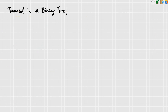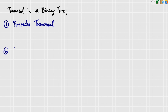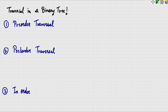For non-linear data structure traversal, if we want to visit nodes, there are three types of traversals: pre-order traversal, post-order traversal, and in-order traversal.